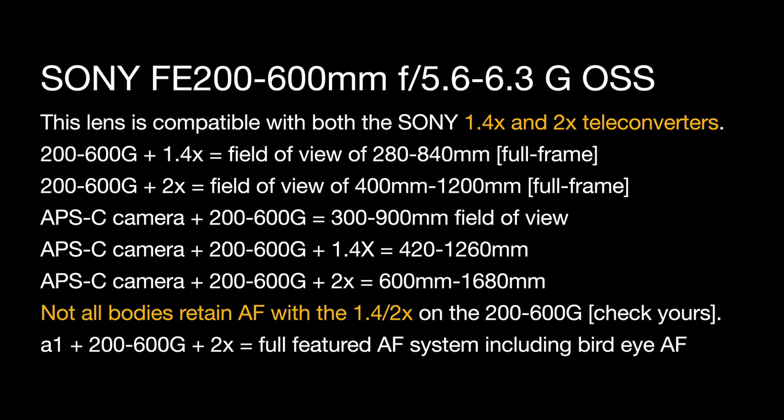This lens is compatible with both the 1.4x and 2x teleconverters made for E-mount. The 200-600G plus a 1.4x gives you a field of view of 280-840mm on full frame. If you add the 2x, the field of view becomes 400-1200mm. If you change to an APS-C camera with a smaller sensor, the 200-600G without a teleconverter is a 300-900mm field of view. But if you add the 1.4x, it becomes 420-1260mm, and if you use a 2x, it becomes a 600-1680mm zoom.